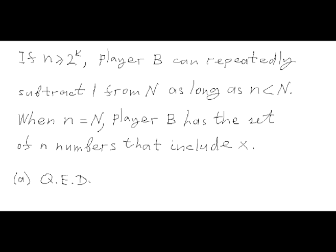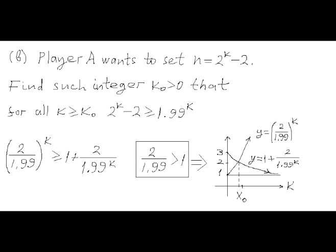So if n is greater than or equal to 2^K, player B can repeatedly eliminate numbers from the initial set one by one using the algorithm we have discussed. When all numbers except n are eliminated, player B has a set of n numbers that includes number X. That proves part A of this problem.